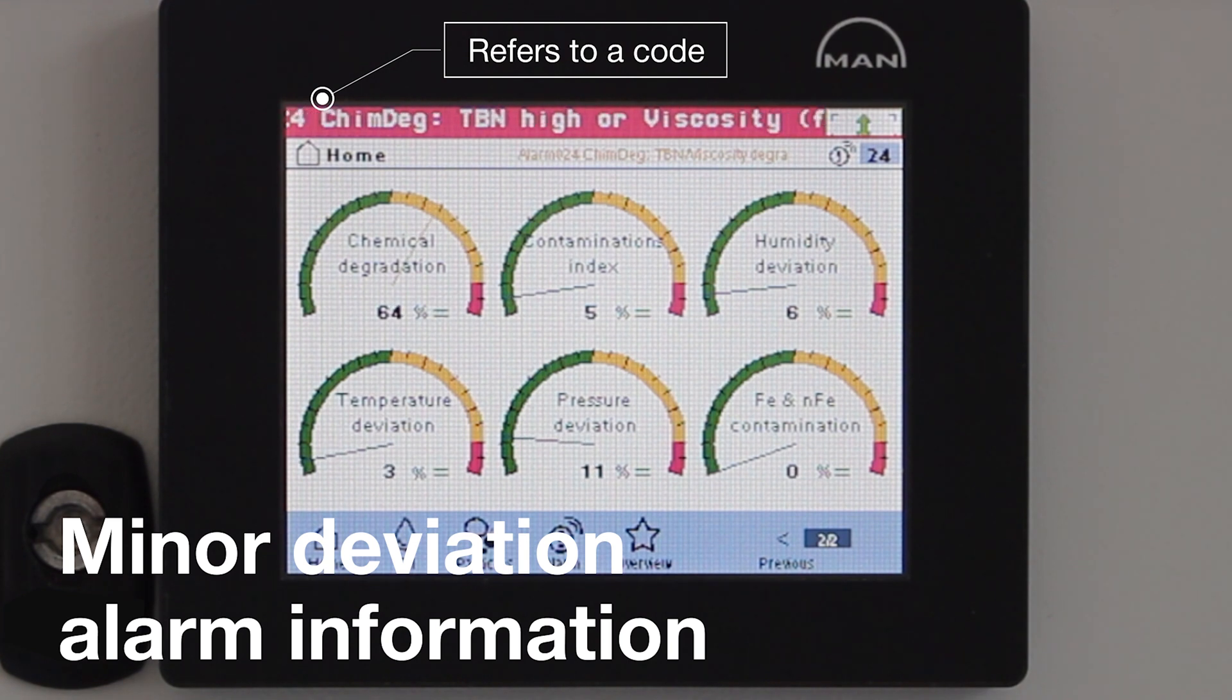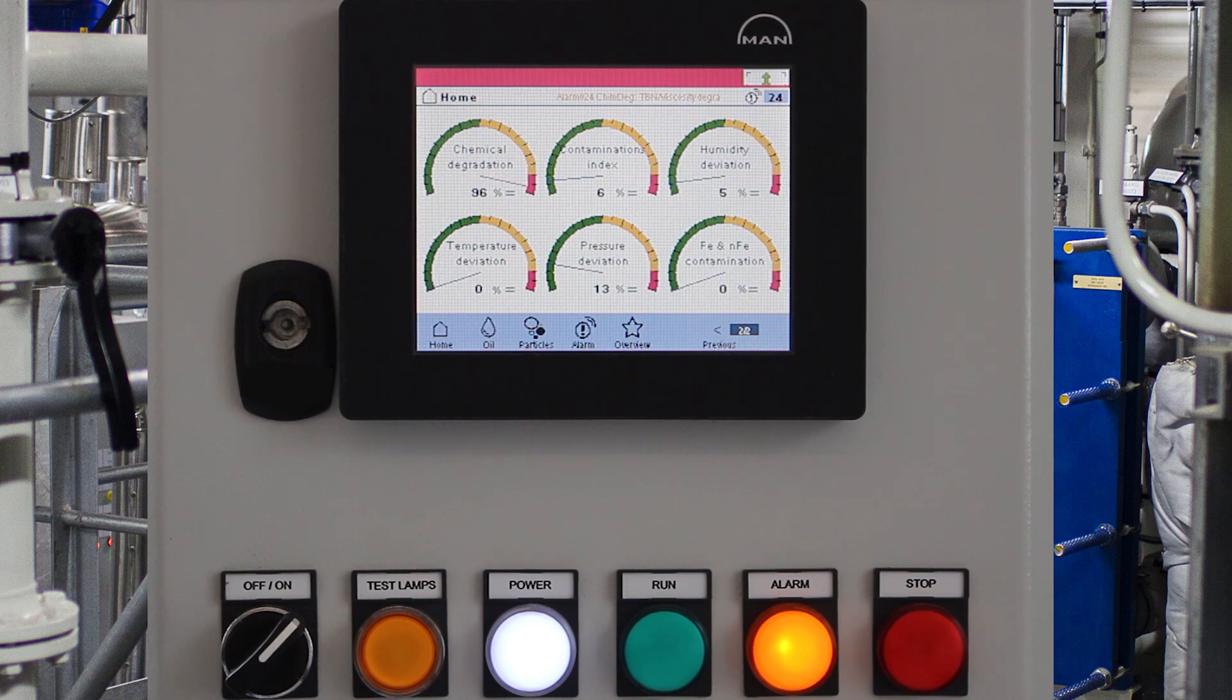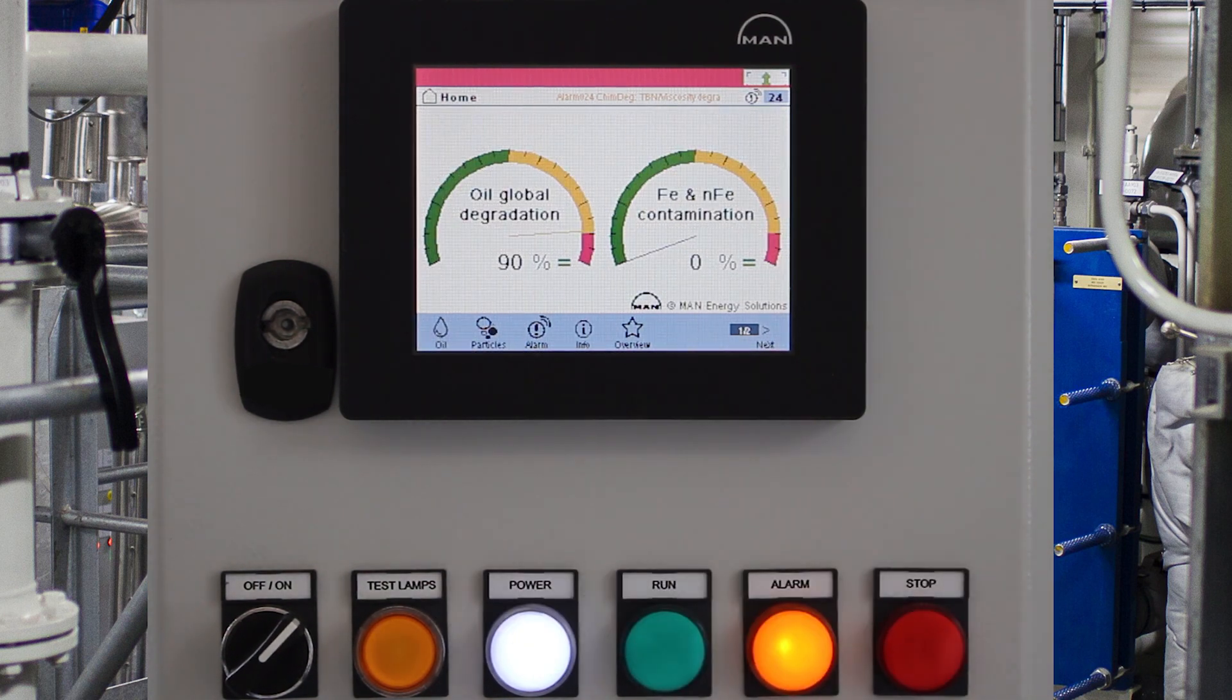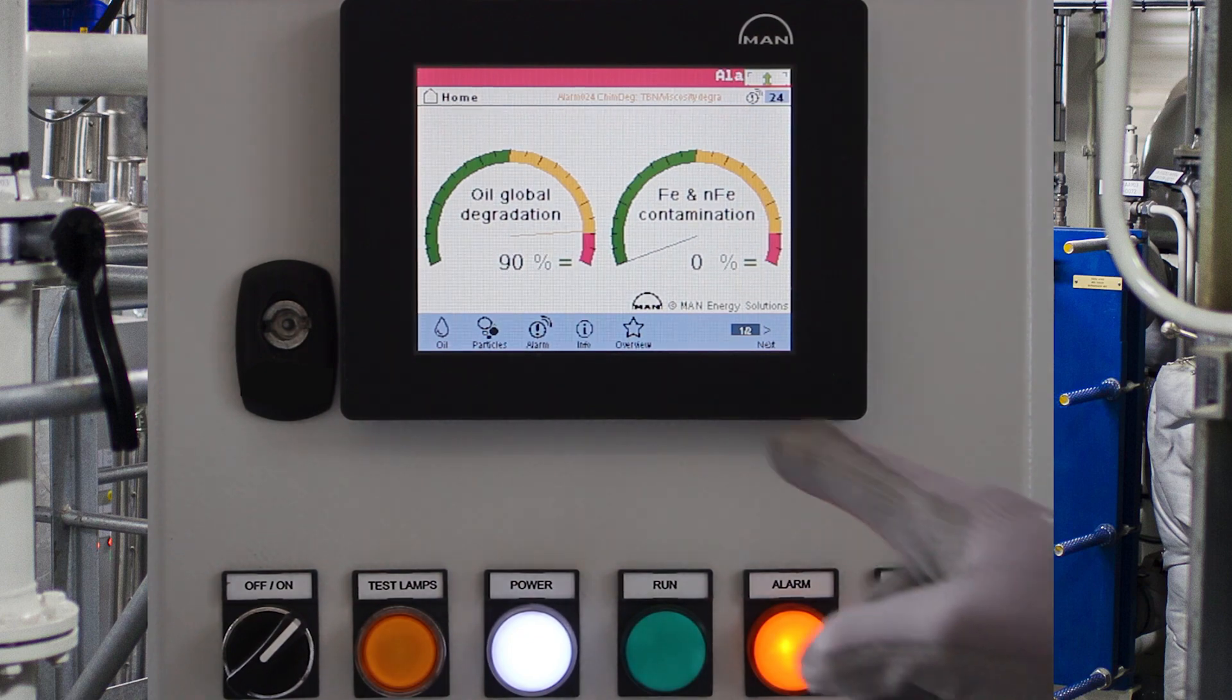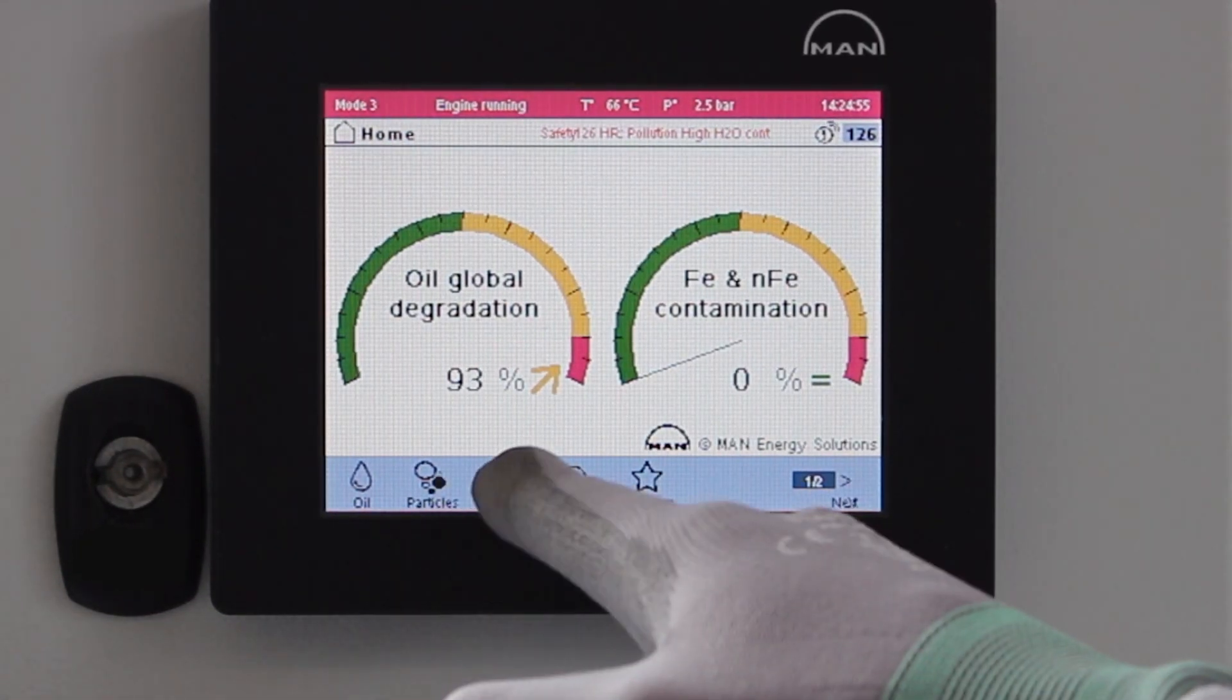The alert refers to a code and recommends the actions to be carried out. The operator establishes a precise diagnosis and knows exactly what is happening. He gets the relevant information from the alarm itself and can take the right decision or action.